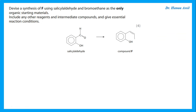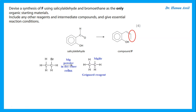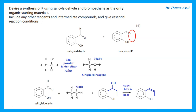Devise a synthesis of compound F using salicylaldehyde and bromoethene as the only starting materials. Looking at compound F, the new part added contains two carbons, which can come from a Grignard. So: bromoethene plus magnesium in dry ether under reflux gives the Grignard reagent. Reacting this with salicylaldehyde adds the two carbons to the carbonyl group, converting it to an alcohol. Then dehydration using concentrated phosphoric acid and heat gives the required double bond in compound F.